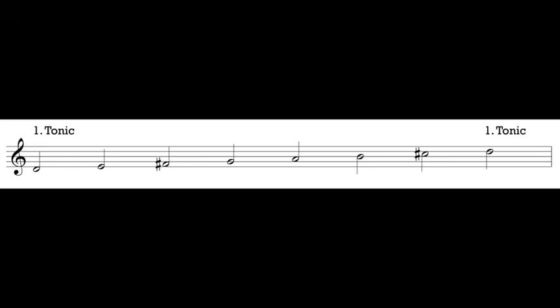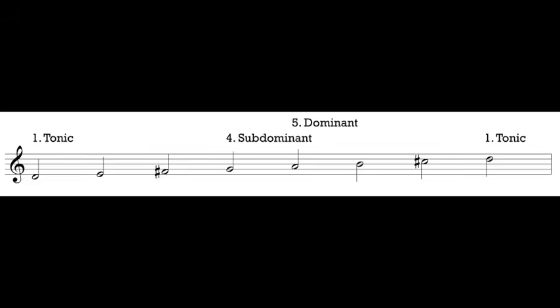Scale degree 1 is the first note in our scale, and even when it reappears at the top of the scale we still call it scale degree 1. The name of scale degree 1 is tonic — from the same word as tone. It's the most important scale degree. If we count up 5 notes from D — D, E, F sharp, G, A — we end up on scale degree 5, which is called the dominant. The dominant is our next most important and most talked about scale degree.